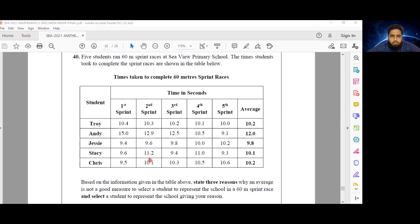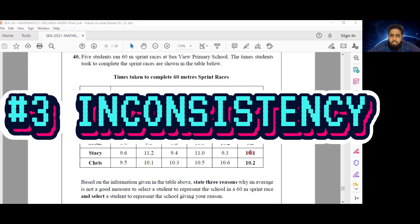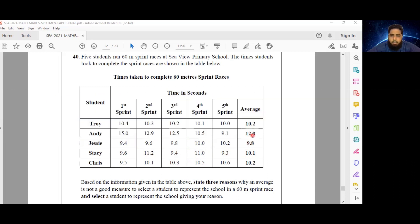So here we have somebody like Stacy. One minute she's running 9.6 seconds, then she goes up to 11.2, then 9.4, then 11.0. So not only is it possible that these 11-second runs were due to a muscle pull or something onto what, it could also mean that she's just being inconsistent.